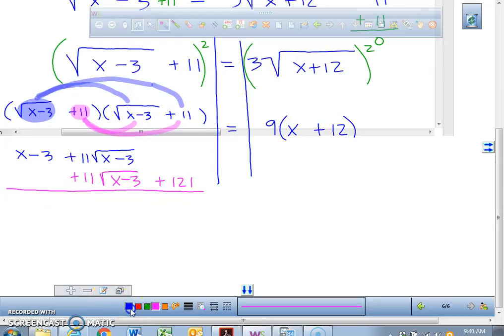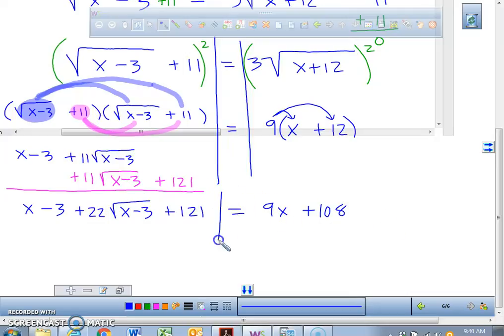Let's see what we have here. Right now, if I add all the like terms together, I have an x, I have a minus 3. How many of these do I have? I have 22 of them. Then I have a plus 121 equal. Now, this 9 we have to distribute to both terms. We're going to have 9x plus 108.